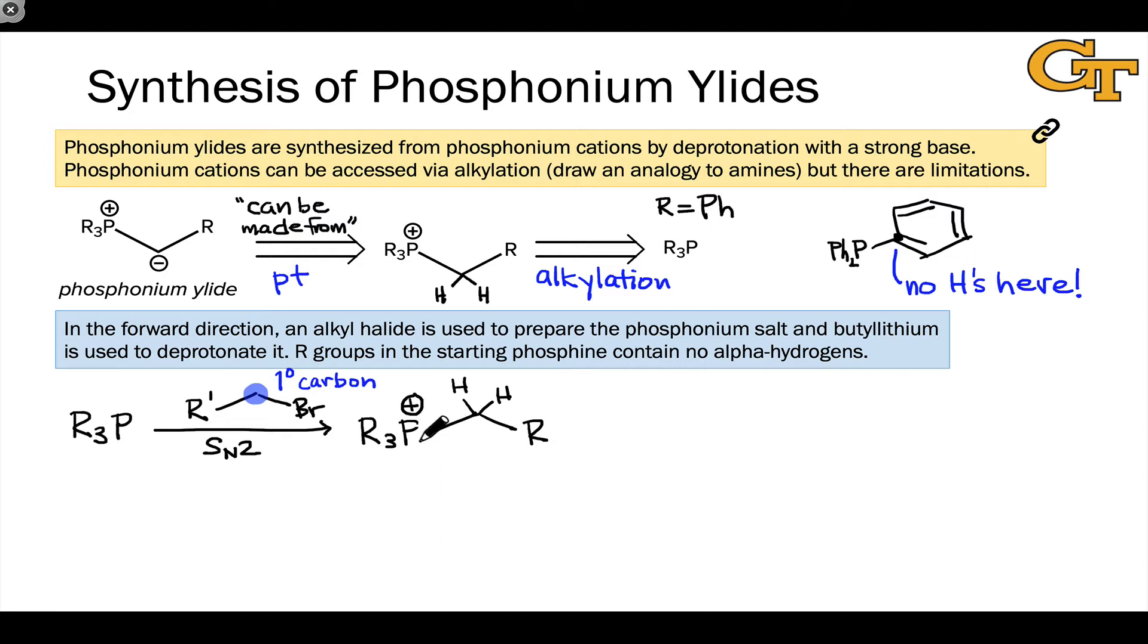The ylide version of this cation contains a carbon with negative charge linked to the phosphorus. And to generate that, we use a base. And it's very common here to use a very strong base, something like an alkyl lithium, like n-butyllithium. This is a strong enough base to deprotonate this hydrogen, which is acidified, or made more acidic, by the positive charge of the phosphorus next door.